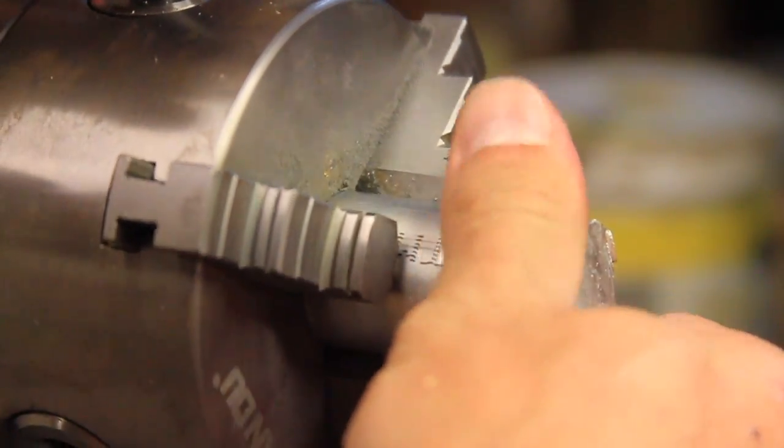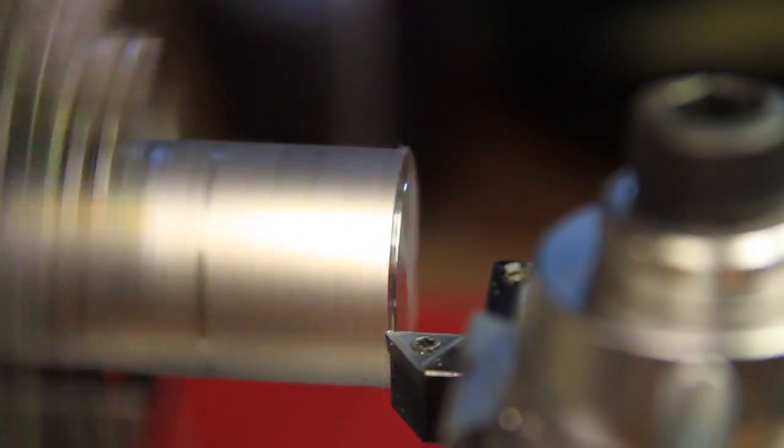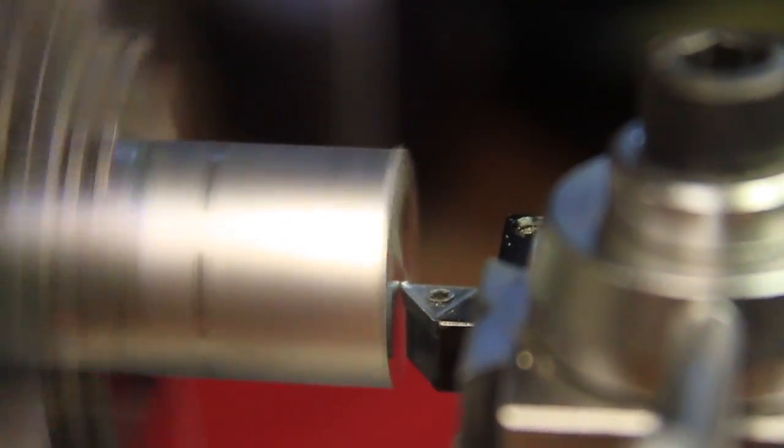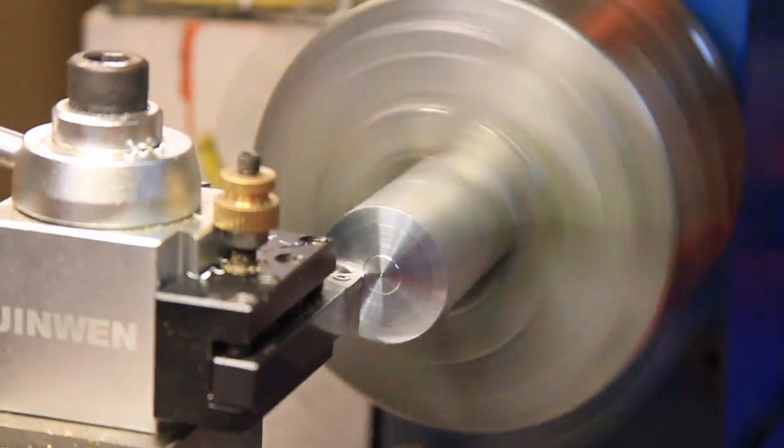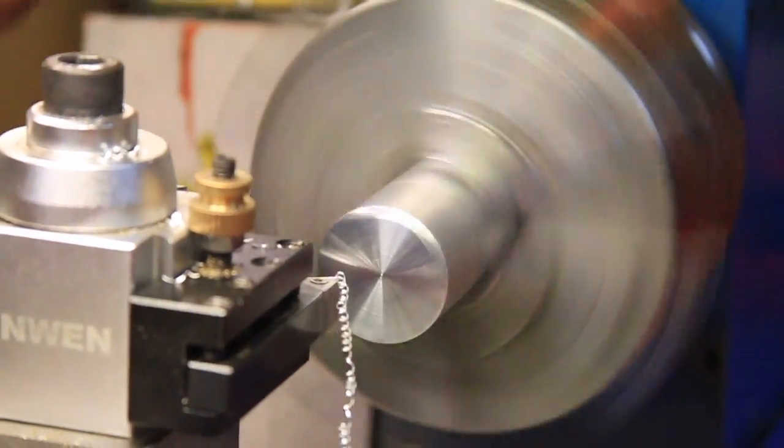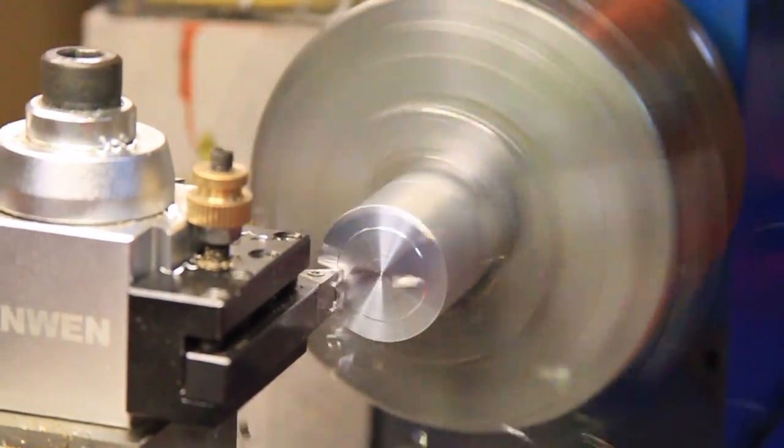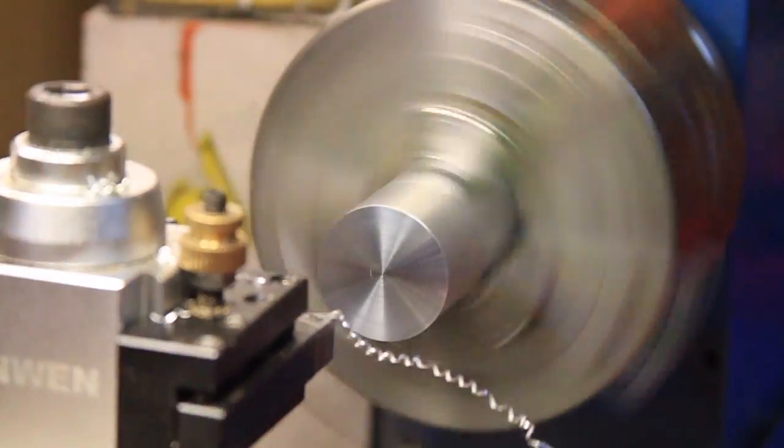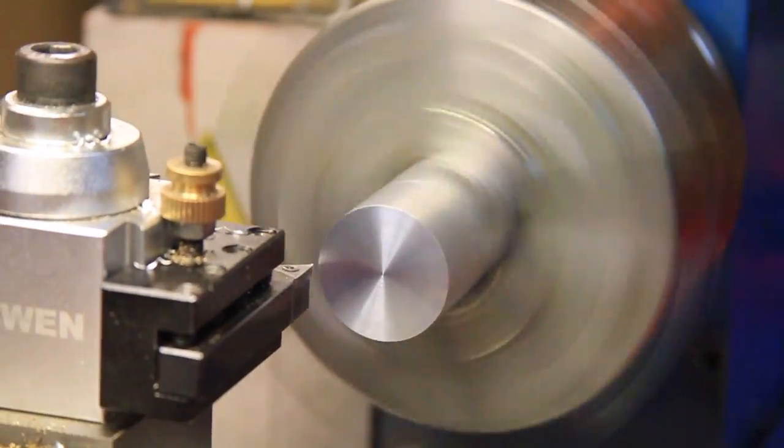I was more or less designing this as I went, and how things ended up weren't quite how I initially intended, but I'll walk through the steps that I took. First I needed to create a piece to mount the flag to, and wanted to utilize the existing hole in the bottom as a way to secure it, so I machined a shoulder for it to rest on.